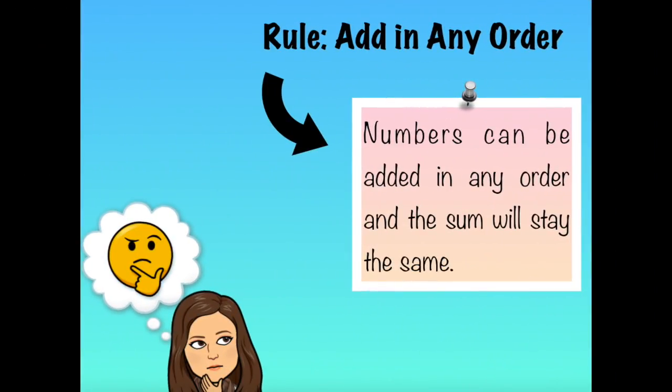In order to add three numbers, you need to remember our rule about adding numbers in any order. Let's review. When you're adding, numbers can be added in any order and the sum will stay the same. So when you're adding together three numbers, start by picking your two favorite numbers, the two you think will be the easiest to join together. Once you join those two together, add on the third one and you've got your sum.